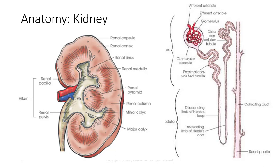The renal tubule is continuous with the capsule and consists of three portions: the proximal convoluted tubule, the nephron loop, also called the loop of Henle, and the distal convoluted tubule. The distal convoluted tubule opens into the collecting ducts, and collecting ducts converge to form a central tubule within the pyramid, which opens at the renal papilla and drains to the minor calyx.